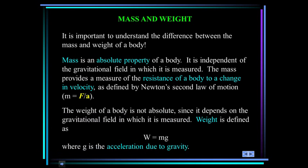Now the weight of the body is not an absolute value. It changes upon the gravitational field. So you weigh differently on the Earth than you do on the Moon than you do on Jupiter. So weight is the mass times acceleration due to gravity.